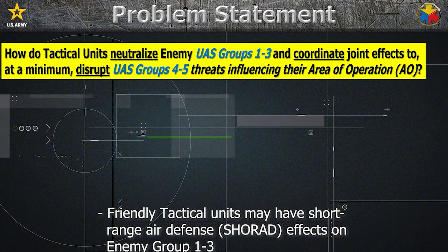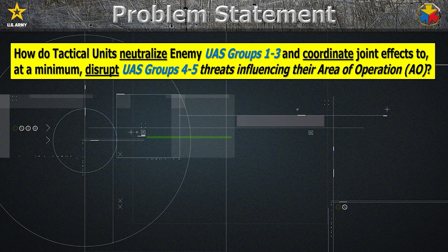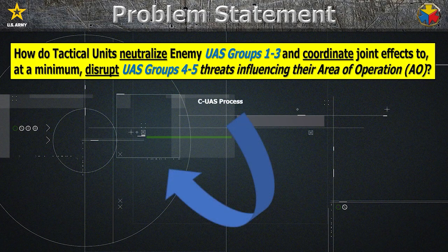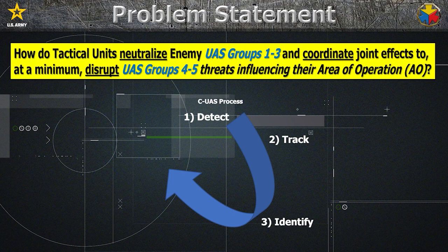For this reason, the following problem statement was developed: How do tactical units neutralize enemy Groups 1 through 3 UASs and coordinate joint effects to, at a minimum, disrupt enemy Groups 4 and 5 threats influencing their area of operations? The counter-UAS process depicted on the bottom of the slide will assist tactical units in thinking of ways to meet its mission against the UAS problem. Units must have the means to detect and track UASs, train the human in the loop to identify the UAS as friend or foe, and if the UAS is hostile, how is the unit defeating the UAS threat?